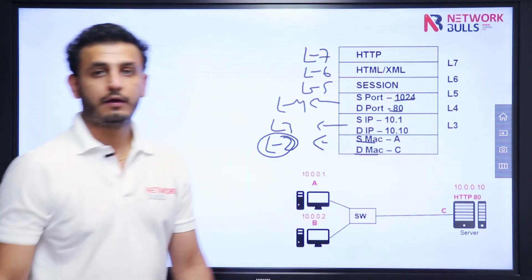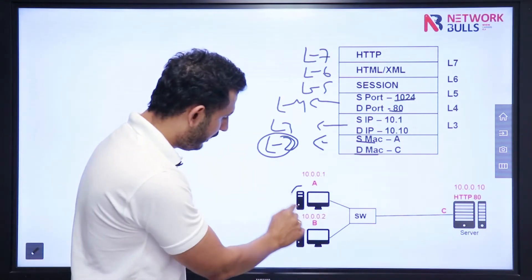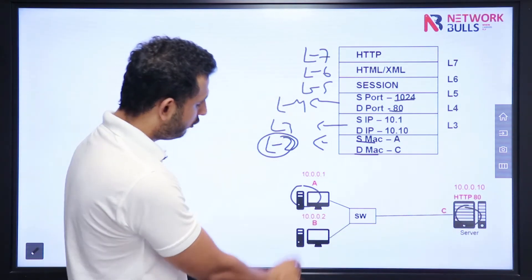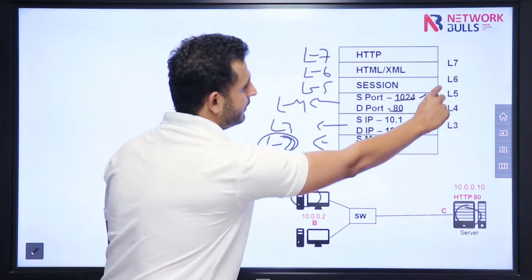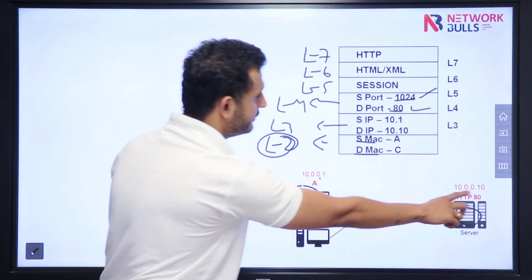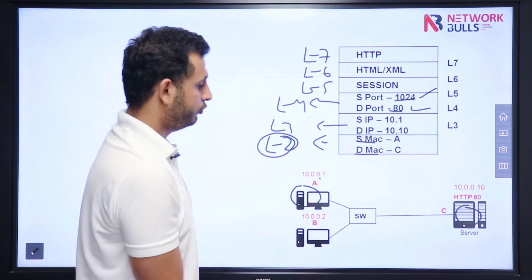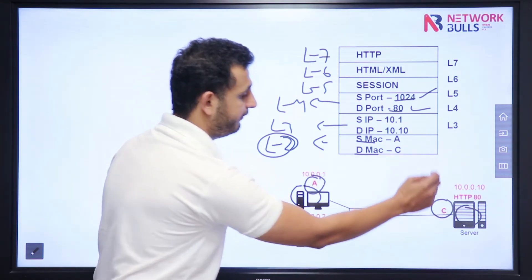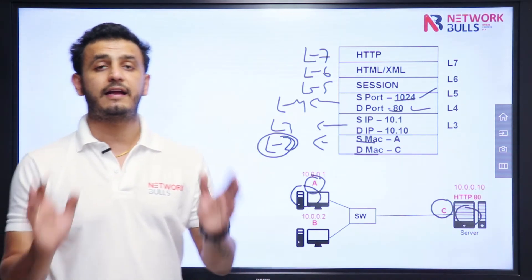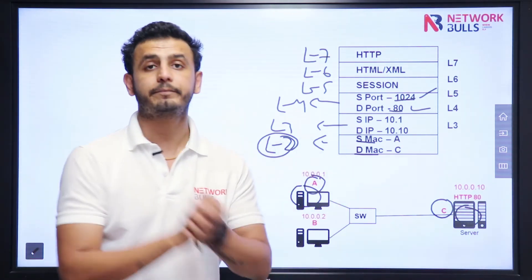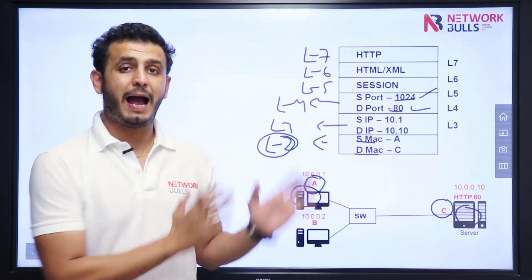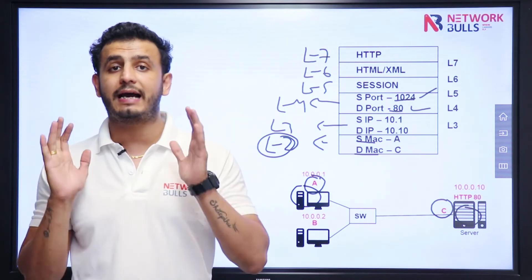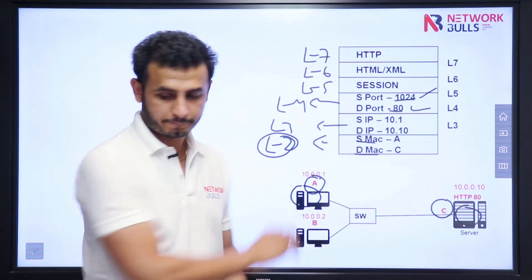At Layer 2 we add MAC addresses. For example, if this computer wants to send information to the server: source port will be a random port, destination port will be 80, source IP will be 10.1, destination IP will be 10.10, source MAC address is the MAC address of the computer, and destination MAC address is the MAC address of the server. In this way, MAC addresses are used at Layer 2 to send information to the correct device in the network.